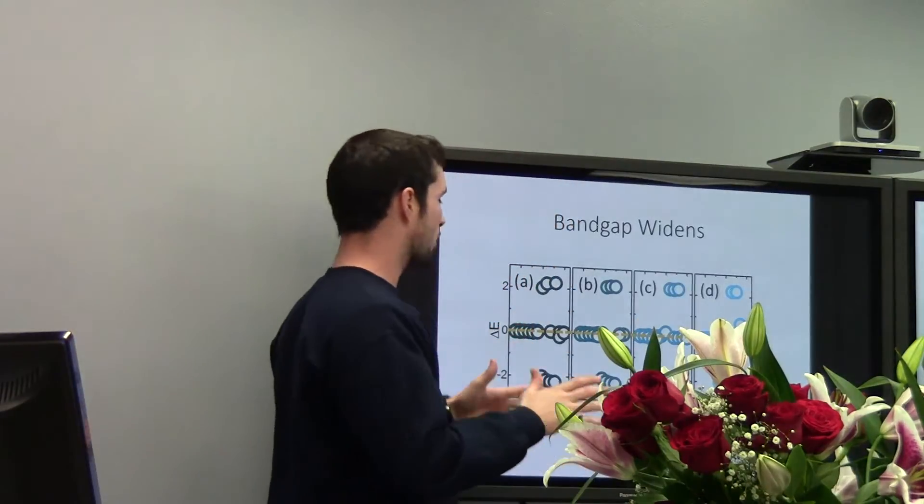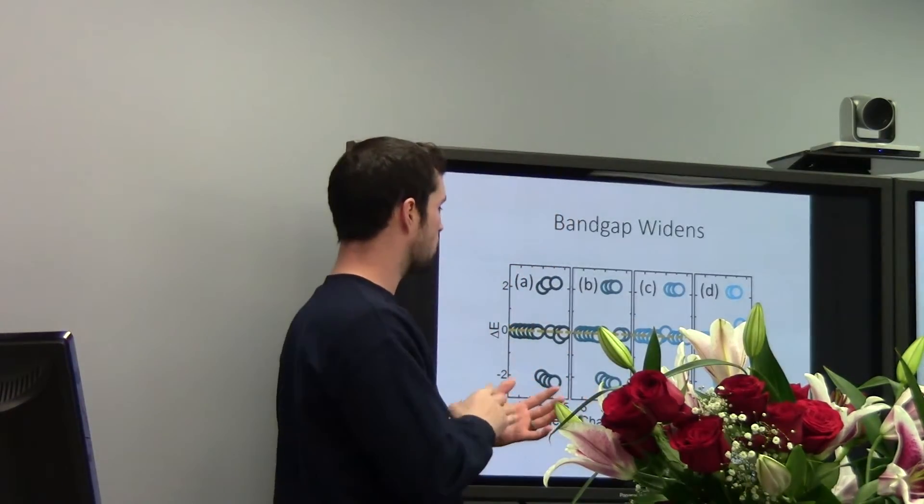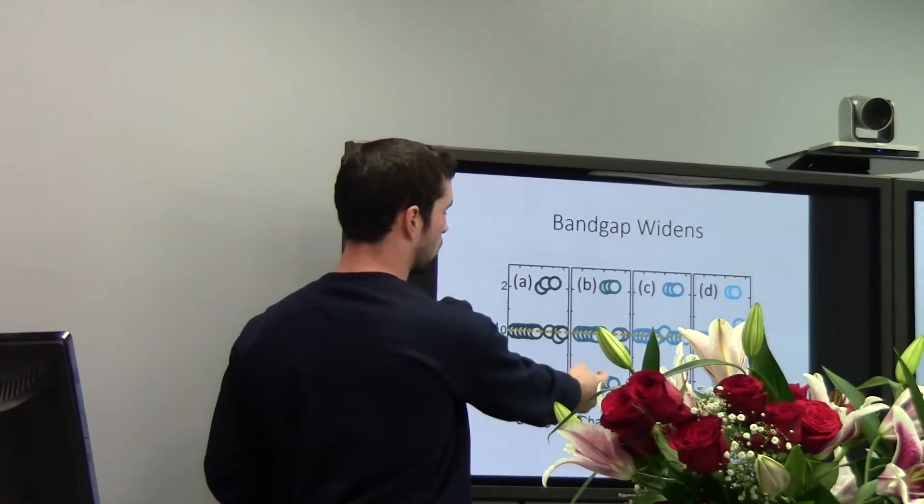But looking at these models, we then explored the band gap for these ones, which is here. So I didn't mention we looked at different spins of 0, 1, 2, and 3. So this is spin 0, 1, 2, and 3.